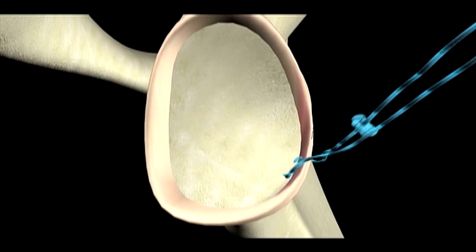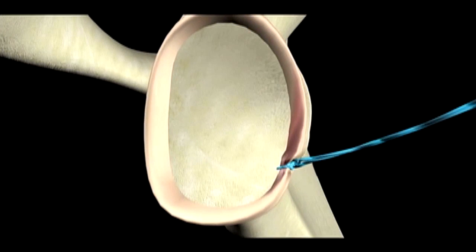The suture is passed through labral tissue. Desired arthroscopic knots are then tied with an open or closed knot pusher.